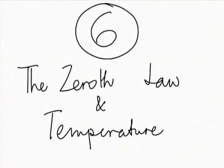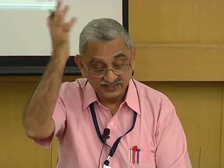The zeroth law was called zeroth because the first and second laws were already defined, and people did not want to rename them. It was thought that the zeroth law was a more basic law compared to the first and second. It turns out that that is not true — all three laws have to have the same status.